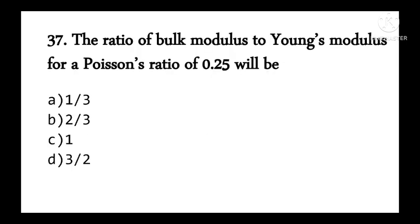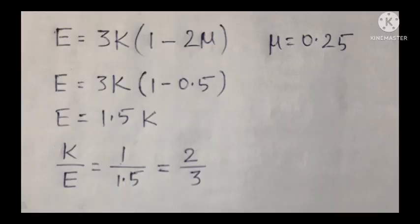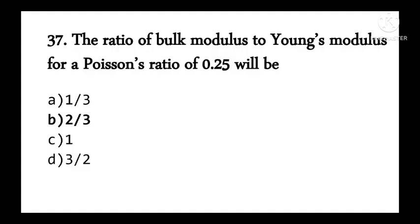The ratio of bulk modulus K to Young's modulus E for a Poisson's ratio of 0.25: using the relation E = 3K(1 − 2μ), substituting μ = 0.25 gives E = 1.5K, so K/E = 1/1.5 = 2/3. Option B is correct.